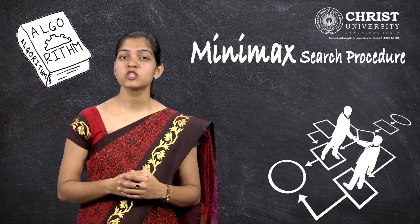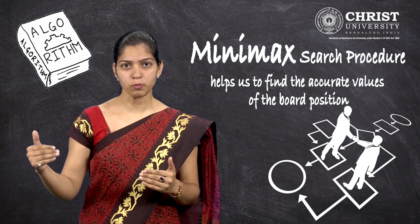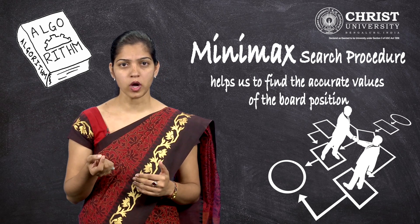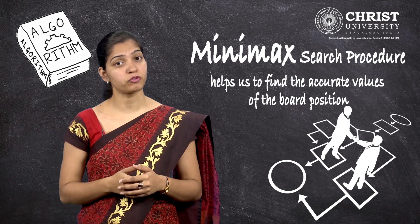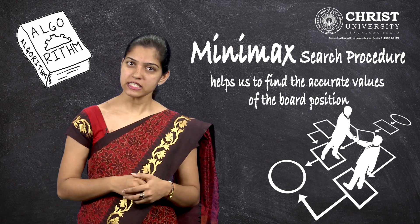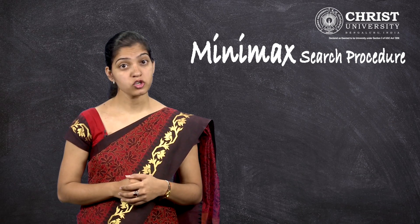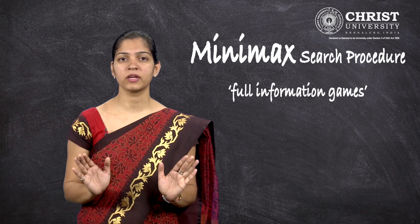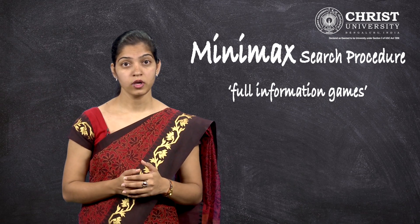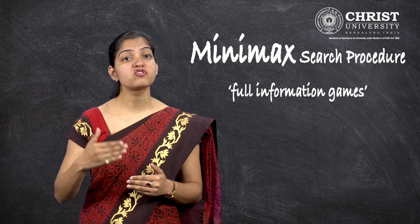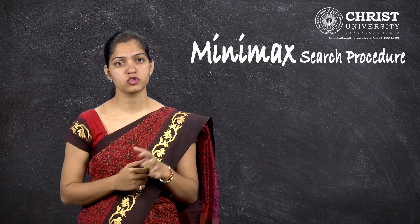Minimax algorithm is one such kind of algorithm. It helps us to find the accurate values of the board position. All these games have at least one thing in common: they are logic games, meaning they can be described by a set of rules and premises. From a given point in the game, you can know what the next possible moves are. They are full information games — each player knows everything about the possible moves of the adversary, and we assume that the player will always try to play his or her best move.